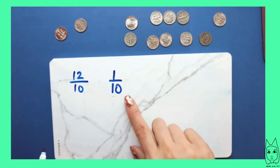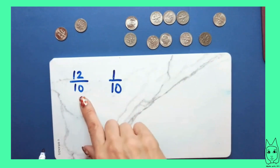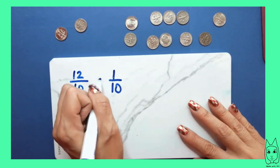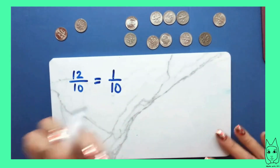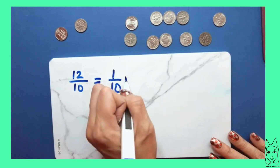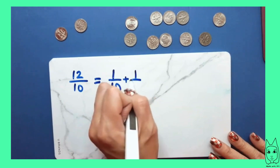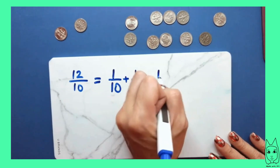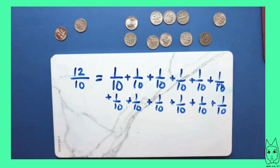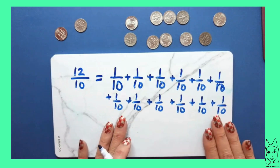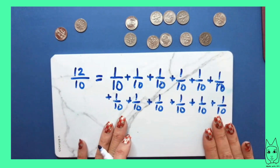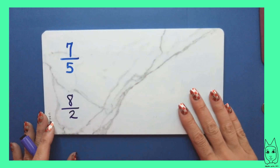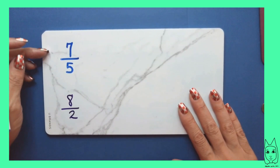The unit fraction in this example is one tenth. Write the sum of unit fractions for 12 tenths — I'm going to write one tenth 12 times. So 12 tenths as a sum of unit fractions.